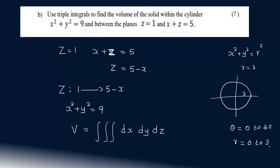The central region has r from 0 to 3, theta from 0 to 2π. For z, the bounds are from 1 to 5 minus x, giving us z from 0 to 2π in theta.